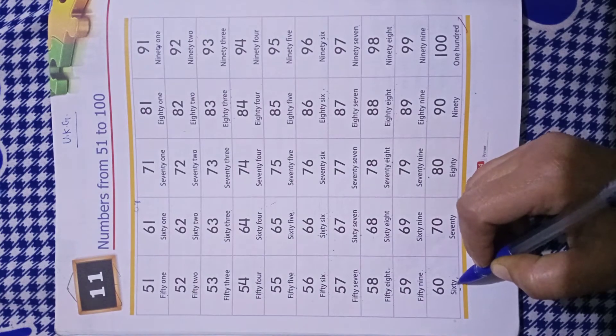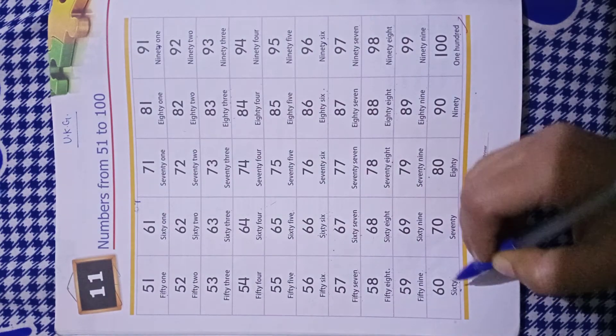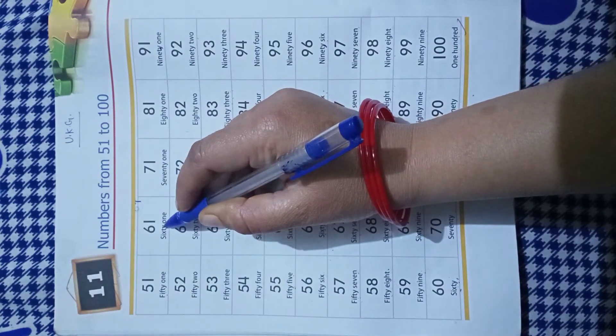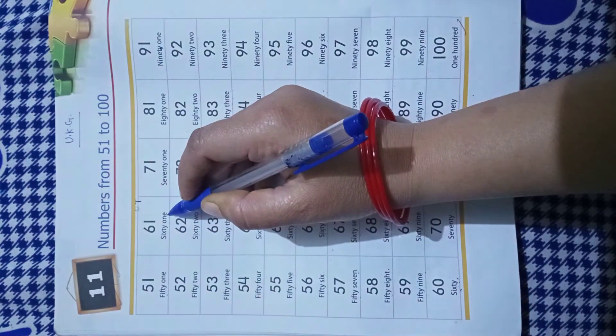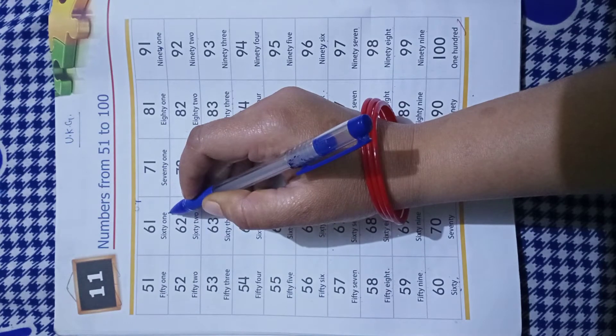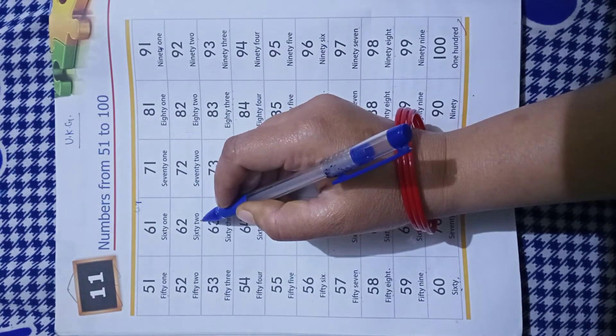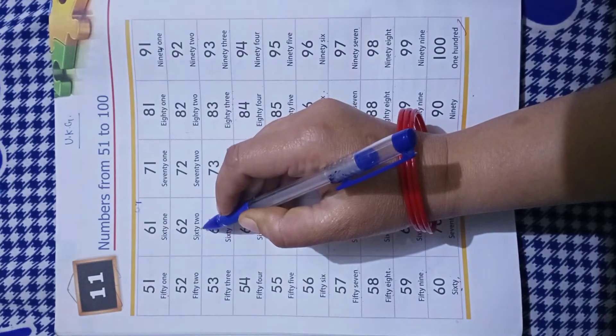SIXTY-60, SIXTY-60 ONE-1-61, SIXTY-60 TWO-2-62.